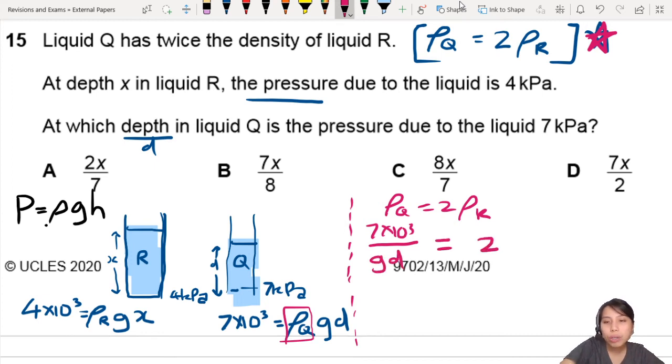Equals to 2 times the density of R. What's the density of R? On this side, I have to rearrange the equation. So express rho R equals to, and I equate that. So this one will be 4 times 10 to the 3 over GX.